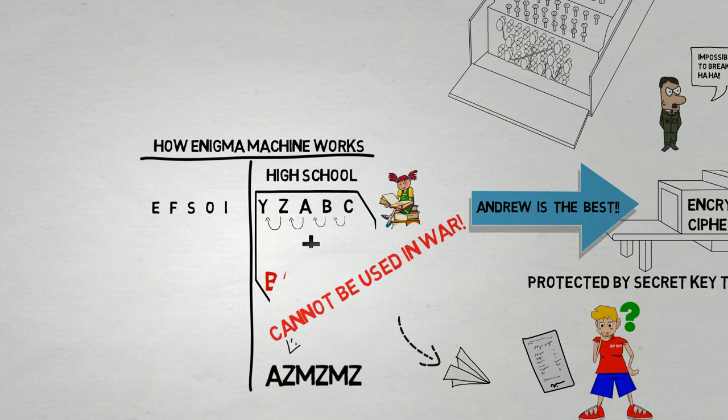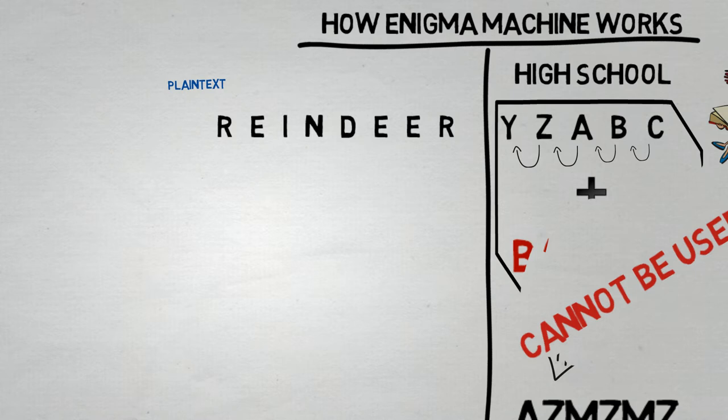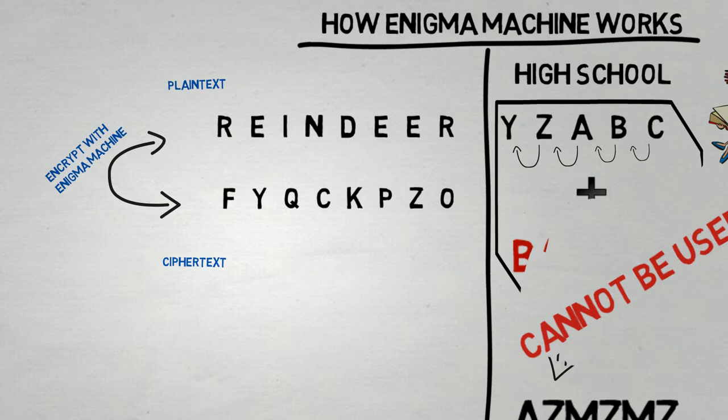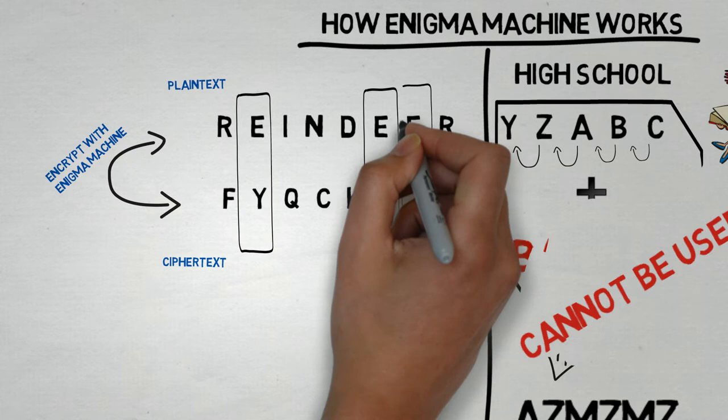Of course, if used during the war, such a simple code would be broken in no time. An amazing feature of the Enigma machine is its ability to substitute similar letters with different letters. For instance, each E in the sentence on the screen is substituted with different alphabets. The first with a Y, the second with a P, and the third with a Z.